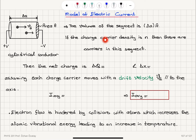If the charge carrier density is N — meaning the number of charges per volume is N, it's the charge density — then how many carriers are in this segment? The charge density is N, number of charges per volume. The volume of the segment is area A multiplied with delta x, the height of the cylinder. Then there will be N·A·delta x carriers in this cylindrical conductor segment.